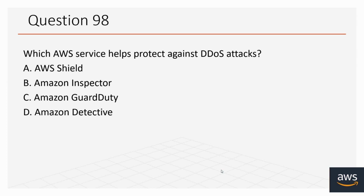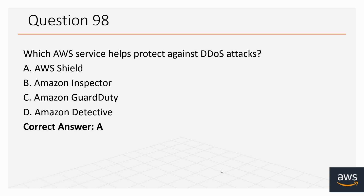Question number 98: Which AWS service helps protect against DDoS attacks? Options: A. AWS Shield, B. Amazon Inspector, C. Amazon GuardDuty, D. Amazon Detective. The correct option is A, AWS Shield.